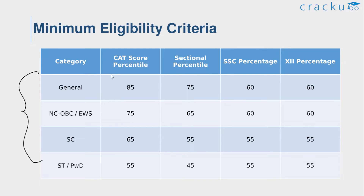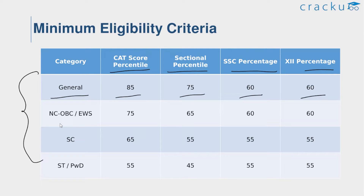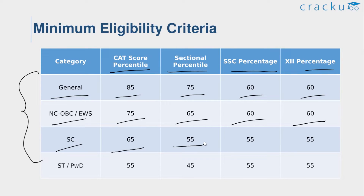For the General category, the CAT percentile is 85, sectional percentile is 75, Class 10 percentage is 60, and Class 12 percentage is 60. For the NC-OBC category, the CAT score percentile is 75, sectional percentile is 65, Class 10 percentage is 60, and Class 12 percentage is 60.